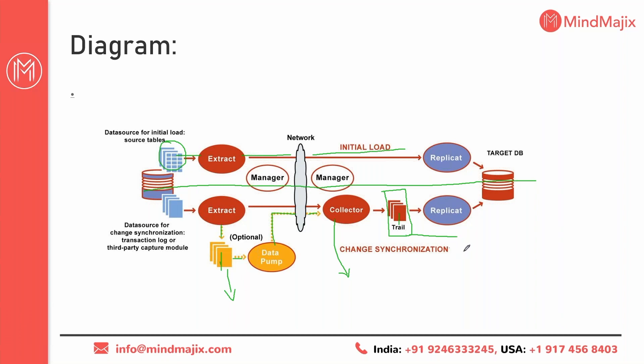So this summarizes the change capture flow, the initial load, the extract process, the manager process, the trail files, and the pump process — the complete overview of the GoldenGate replication flow.